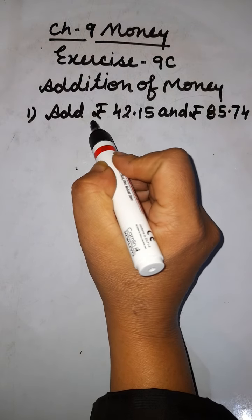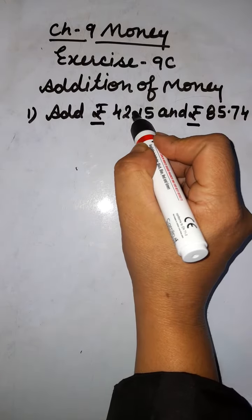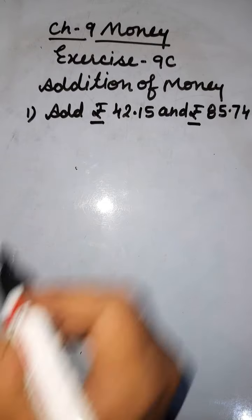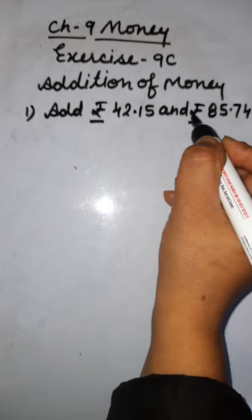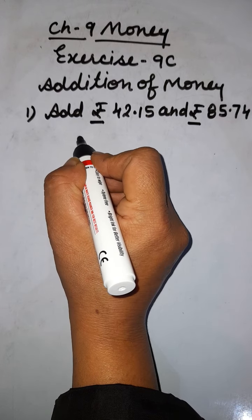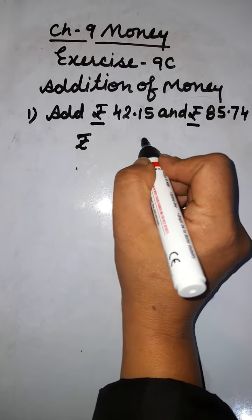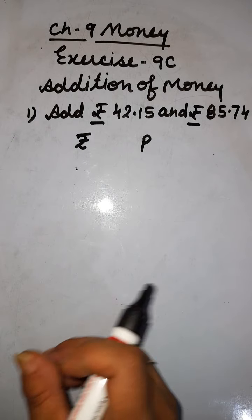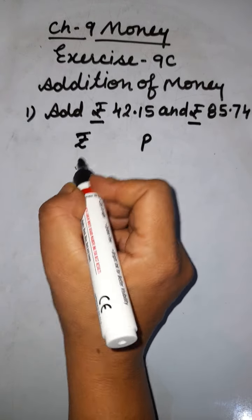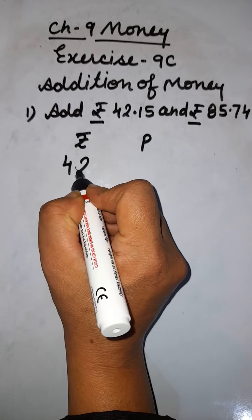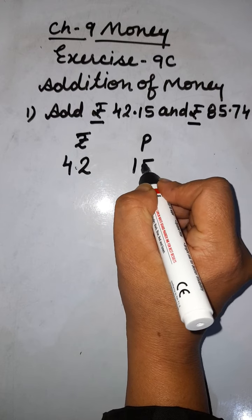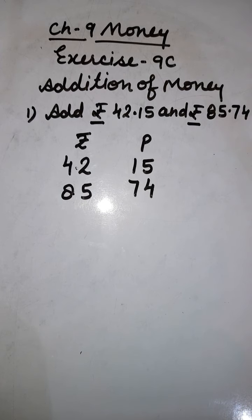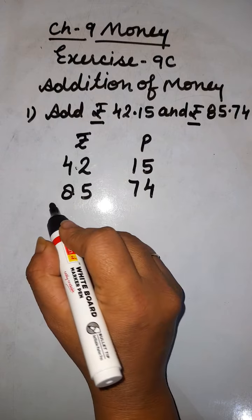You can see here this is the symbol of rupees. After the decimal point it is paise, and before the decimal point it is rupees. We will first write the amounts in the columns of rupees and paise. In the rupees column we have 42 rupees, and in the paise column we have 15 paise. And here, 85 rupees and 74 paise. Now we will add.